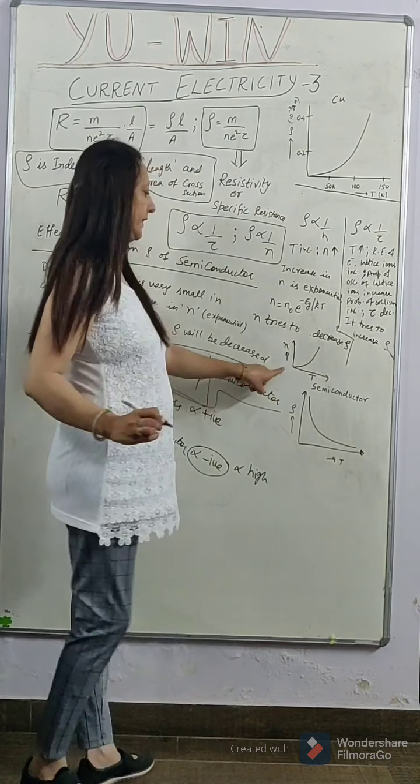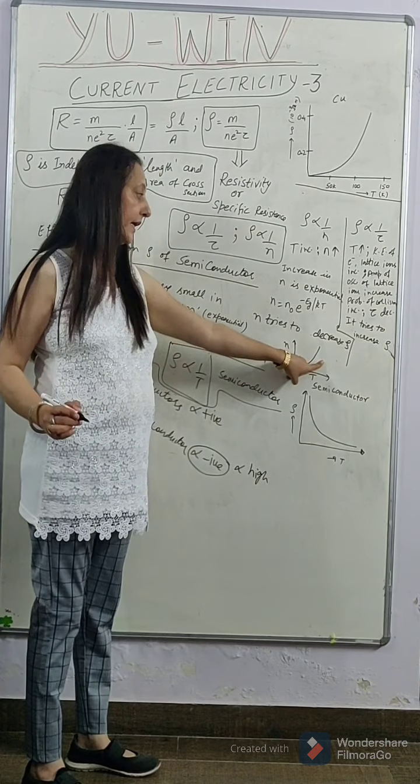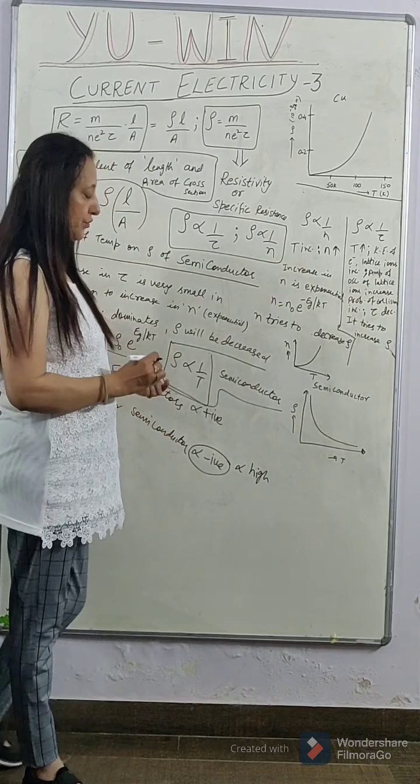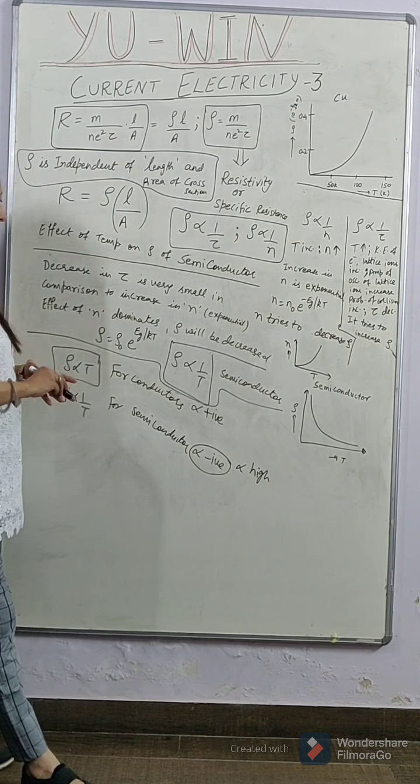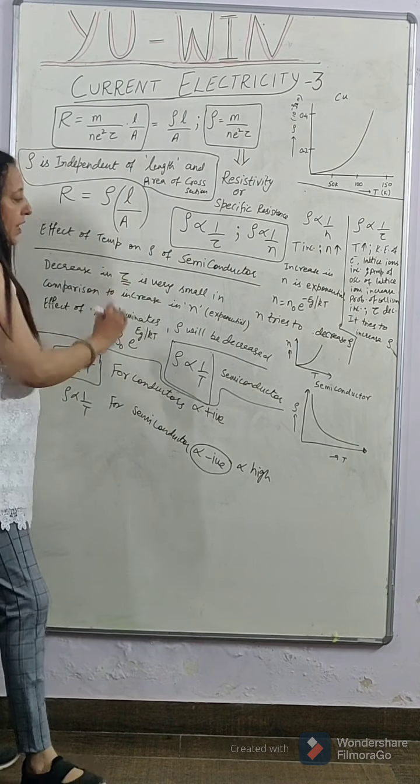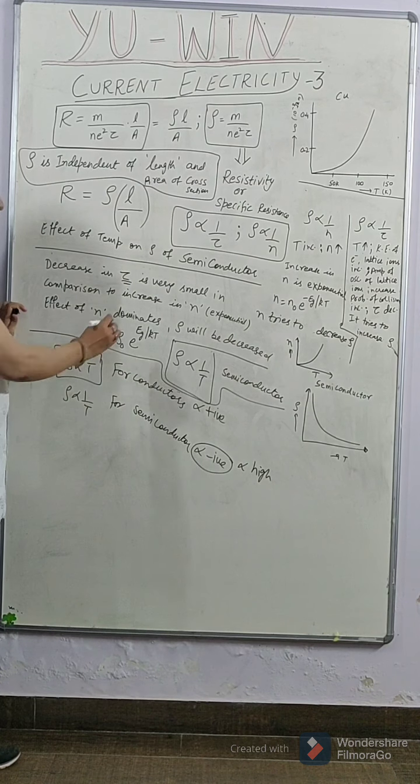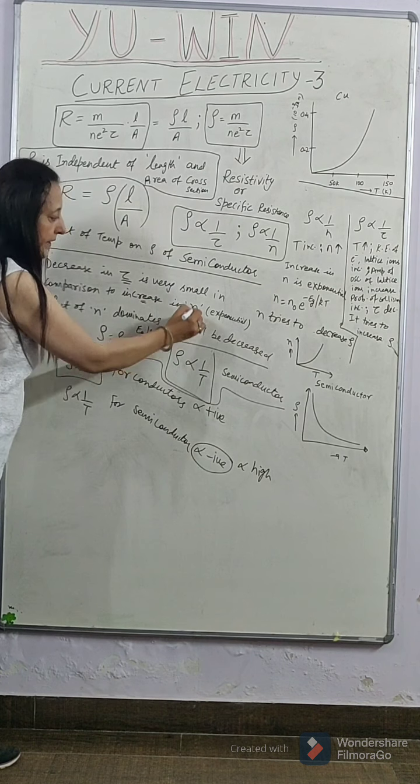The number density of electrons increases this way. Whereas relaxation time's effect is very less. So, decrease in tau is very very less in comparison to increase in the number density.